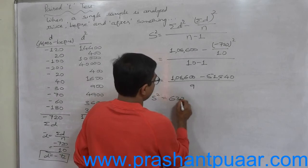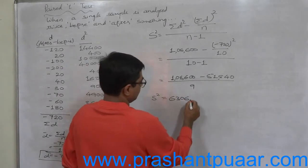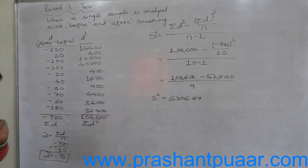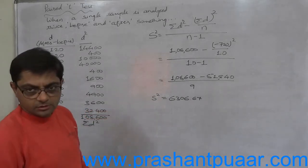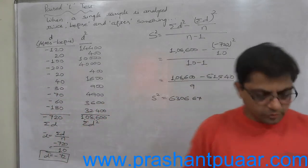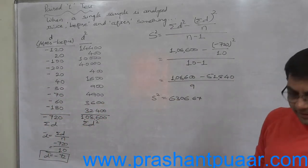Is it 118,600? First, what is square of 720? 518,000 divided by 10 is 51,840. So ultimately s-square is 118,600 minus 51,840 divided by 9, which equals 6,306.67. This is s-square. In the formula of t we need two things: d-bar and s-square. This was the working note.